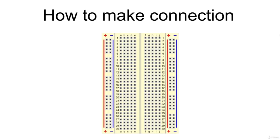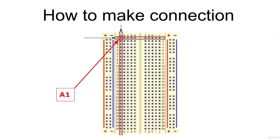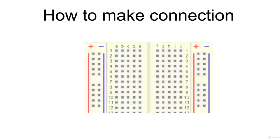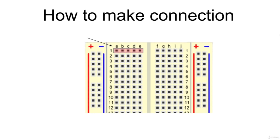Many breadboards have numbers and letters to mark rows and columns. These annotations give each hole a unique identifier. For example, the hole in column A at row 1 is indicated as A1, and the hole in column J at row 30 is indicated as J30. Each set of five holes forming a half-row is electrically connected. For example, hole A1 is electrically connected to holes B1, C1, D1, and E1, but not to hole A2 or to holes F1, G1, H1, I1, or J1 on the other half of the row.